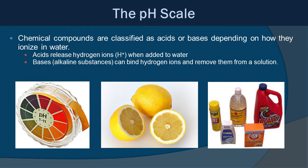Chemical compounds are classified as either acids or bases depending on how they ionize in water. Acids release hydrogen ions, H+, when added to water, whereas a base — otherwise known as alkaline substances — can bind hydrogen ions and remove them from the solution.